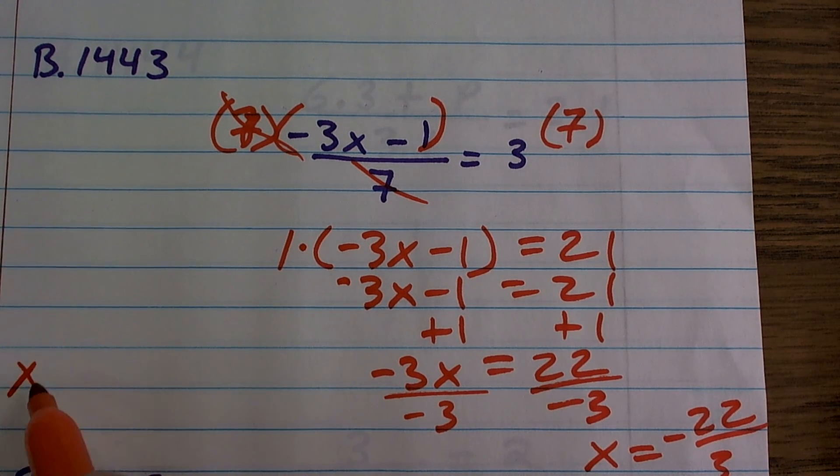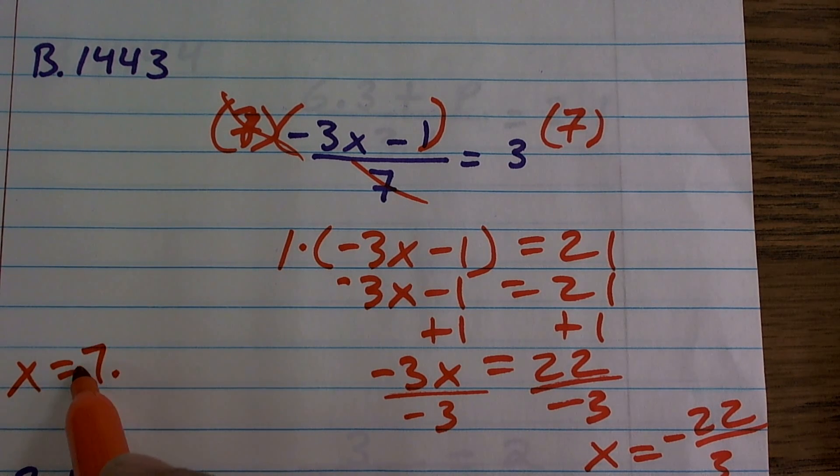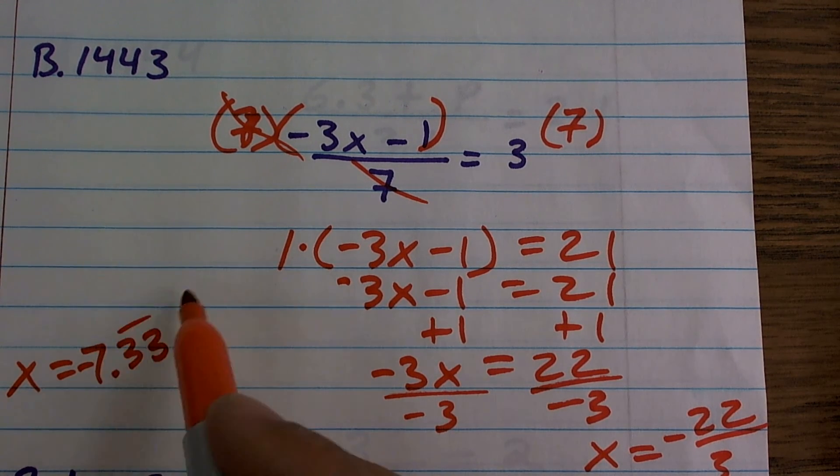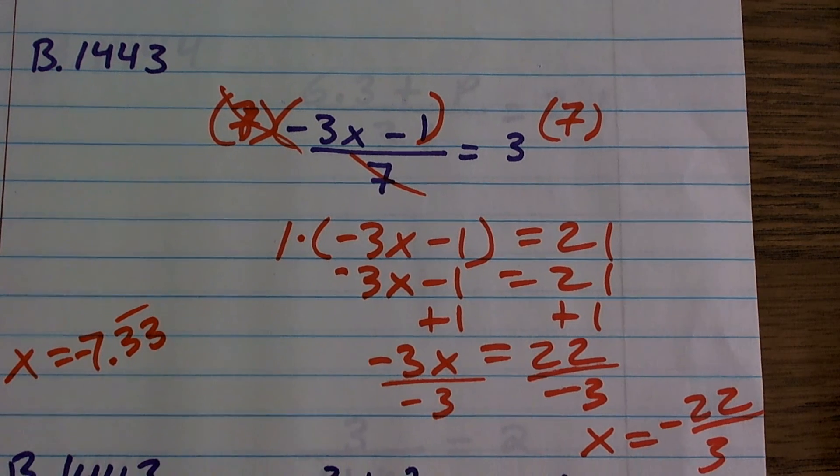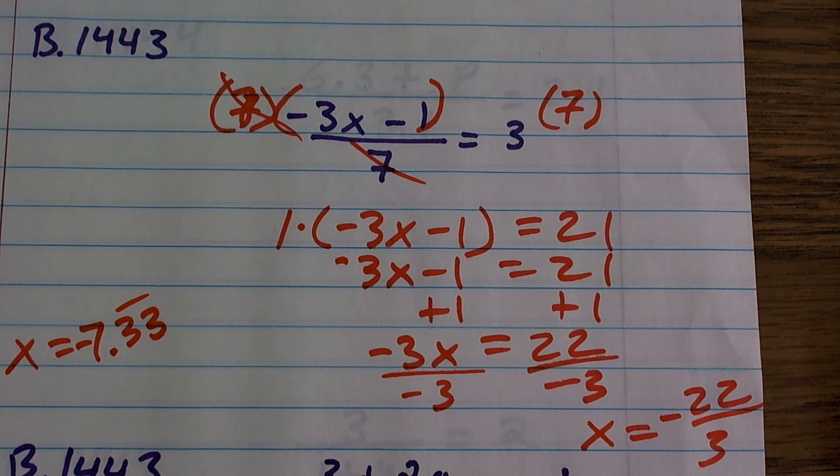So if you want to round it, you could say x equals negative 7.33 repeating would be the decimal approximation of that. So there you go. That's how you do it.